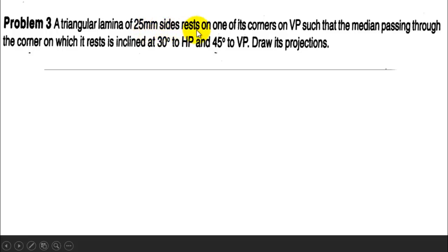A triangular lamina of 25mm sides rests on one of its corners on VP such that the median passing through the corner on which it rests is inclined at 30 degrees to HP and 45 degrees to VP. Draw its projections.